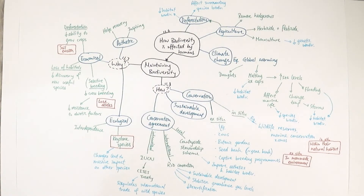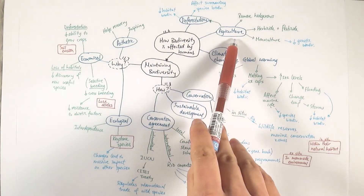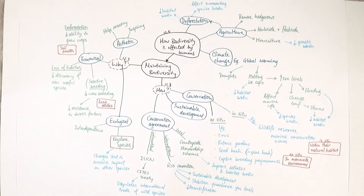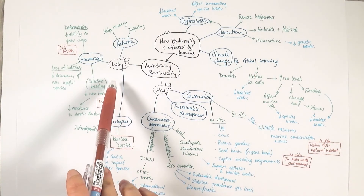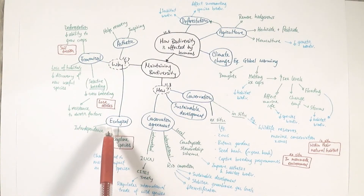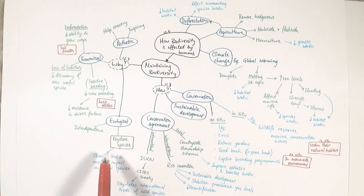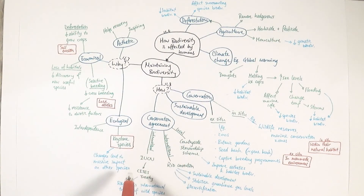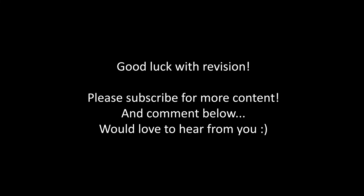To summarize, this is the second part of Chapter 11. Biodiversity is affected by humans through deforestation, agriculture, and climate change — know the knock-on effects and examples. We need to maintain biodiversity for aesthetic, economical, and ecological reasons, especially protecting keystone species. Conservation methods include in-situ and ex-situ conservation, sustainable development, and international and local conservation agreements such as CITES, the Rio Convention, and the Countryside Stewardship Scheme.